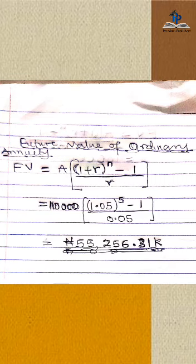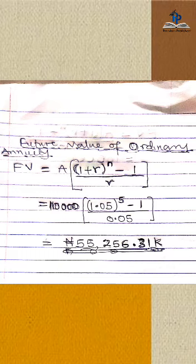In the next line, we place the values: A placed as 10,000, open brackets, 1.05, close bracket power N placed as 5, minus 1, divided by R placed as 0.05, close bracket.